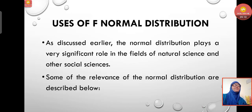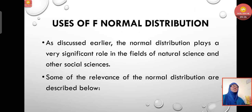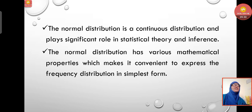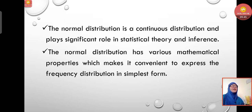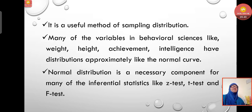Now let's look at the uses of the normal distribution curve. The normal distribution plays a very significant role in natural science and social sciences. It is a continuous distribution and plays a significant role in statistical theory and inference. It has various mathematical properties which make it convenient to express frequency distribution in its simplest form. It is a useful method of sampling distribution, and many variables in behavioral sciences like weight, height, achievement, and intelligence have distributions approximately like the normal curve.